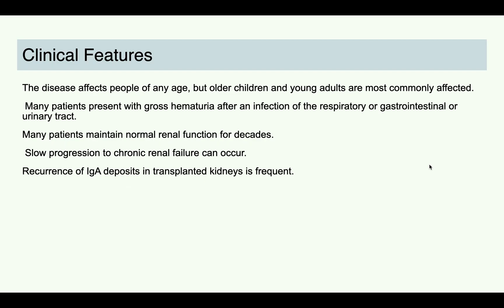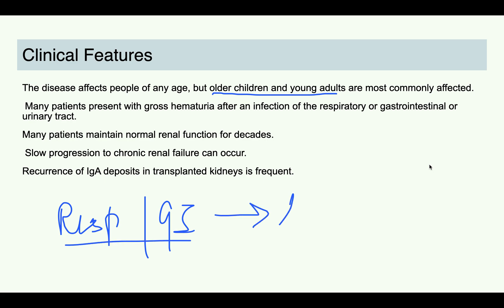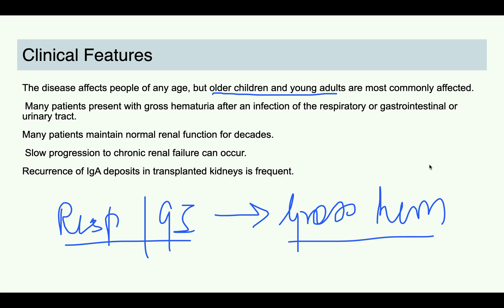How will the patient present? The patient can present at any age; however, the most common patients are older children or young adults. Patients usually present after a respiratory viral infection or GI infection, and the patient will go into gross hematuria. This is the typical presentation — gross or microscopic hematuria following an infection.